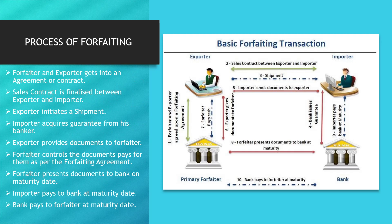When we talk about the process of forfeiting, as you can see in the diagram, the forfeiter and exporter first agree upon a forfeiting agreement — that is point number one. Then a sale contract is signed between the exporter and importer, because the exporter has to sell goods to the importer — that is point number two. Then the exporter sells or supplies the goods and shipment is initiated by the exporter — that is point number three.